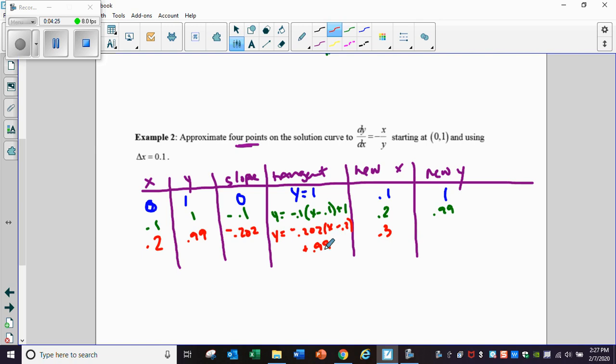Then with my calculator, if I plug in 0.3 into this tangent line equation, I'm going to get 0.9698. I'm now going to bring that point all the way down here, and I'm on my last row because I needed to estimate four points, so I only need four rows to do that.